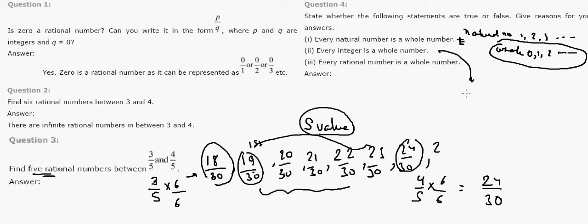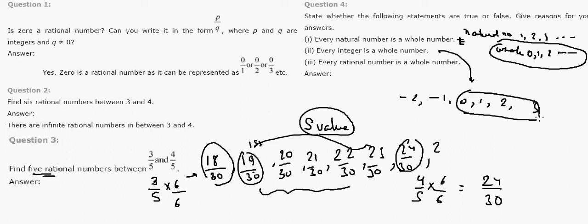Second statement: every integer is a whole number. Integers can be negative as well as positive. Whole numbers start from 0 and do not cover negative values. Hence this statement is FALSE.